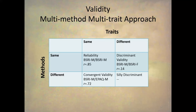We correlate the same method, the BSRI, with different traits — the BSRI masculine scale with scores on the BSRI feminine scale — and that correlates 0.14. That's our discriminant validity. Then we correlate different methods with the same trait, giving us convergent validity: the BSRI masculine score with the EPAQ masculine score gives us 0.72. So with low discriminant validity (r = 0.14) and high convergent validity (0.72), that's evidence that the BSRI masculinity scale is a valid measure.